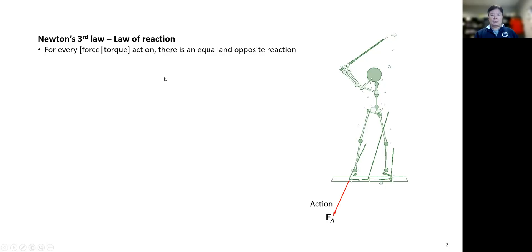According to this law, there is an equal and opposite reaction at the same time — a force going the other way. This reaction is provided by the ground and it is acting on the golfer's foot. The action and the reaction have the same magnitudes and opposite directions.